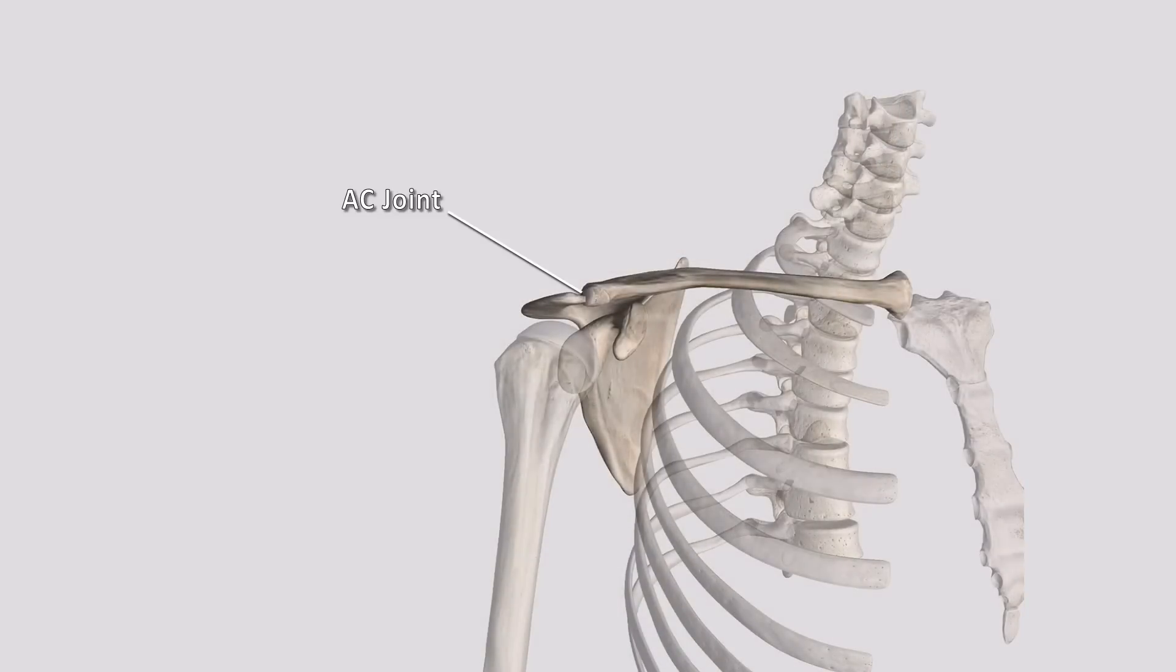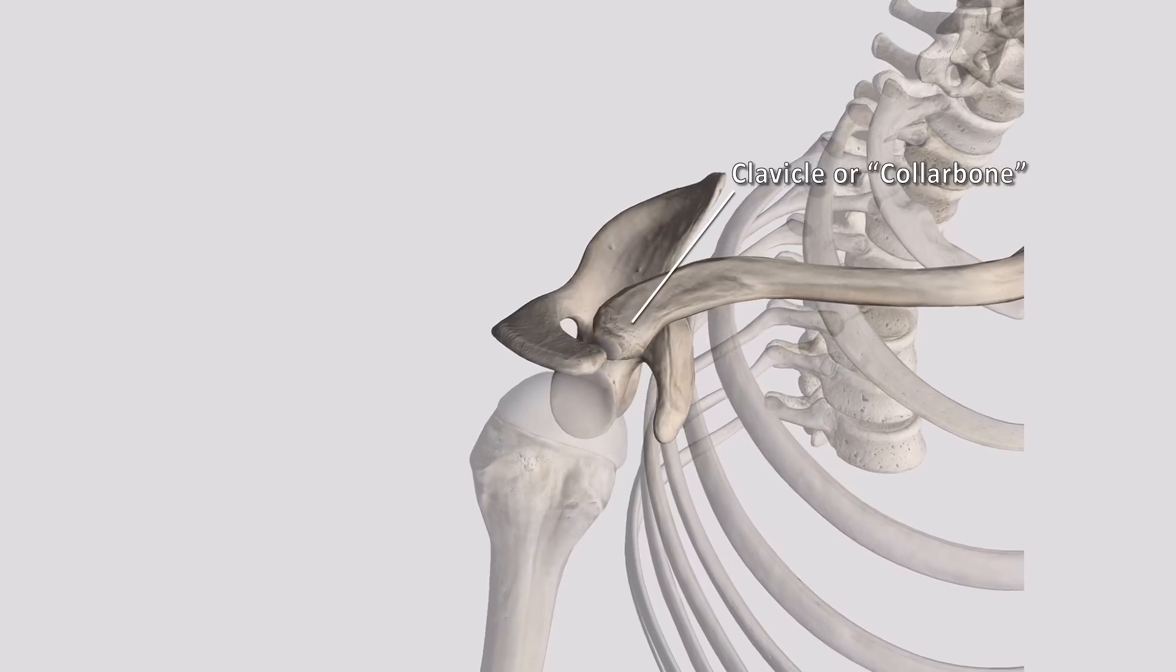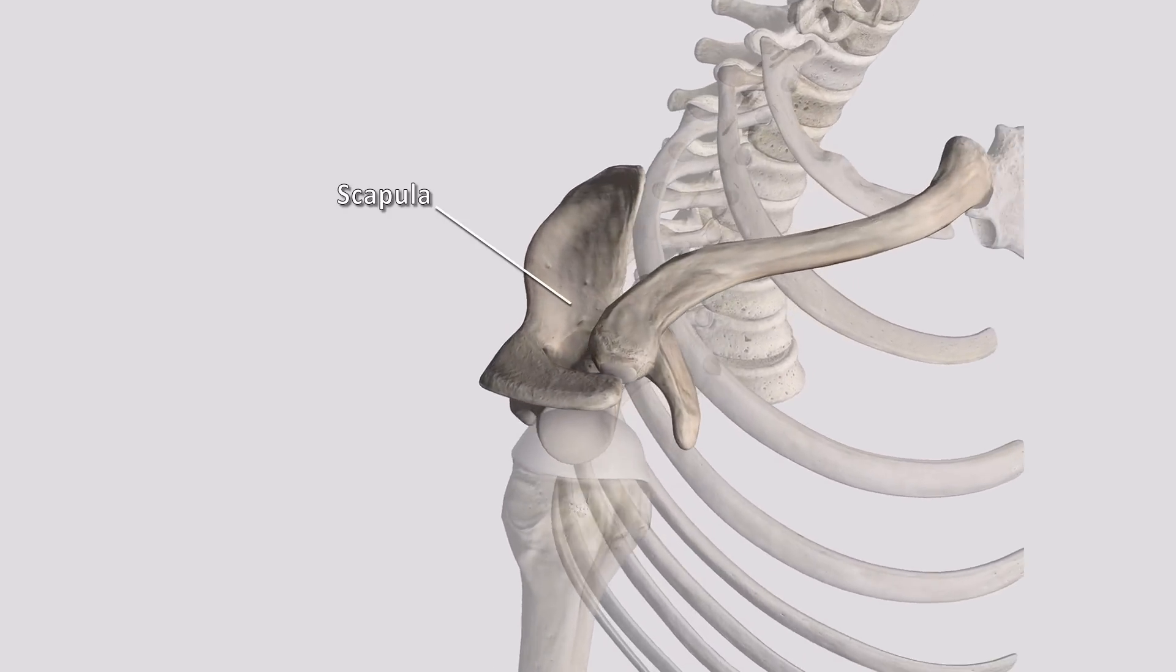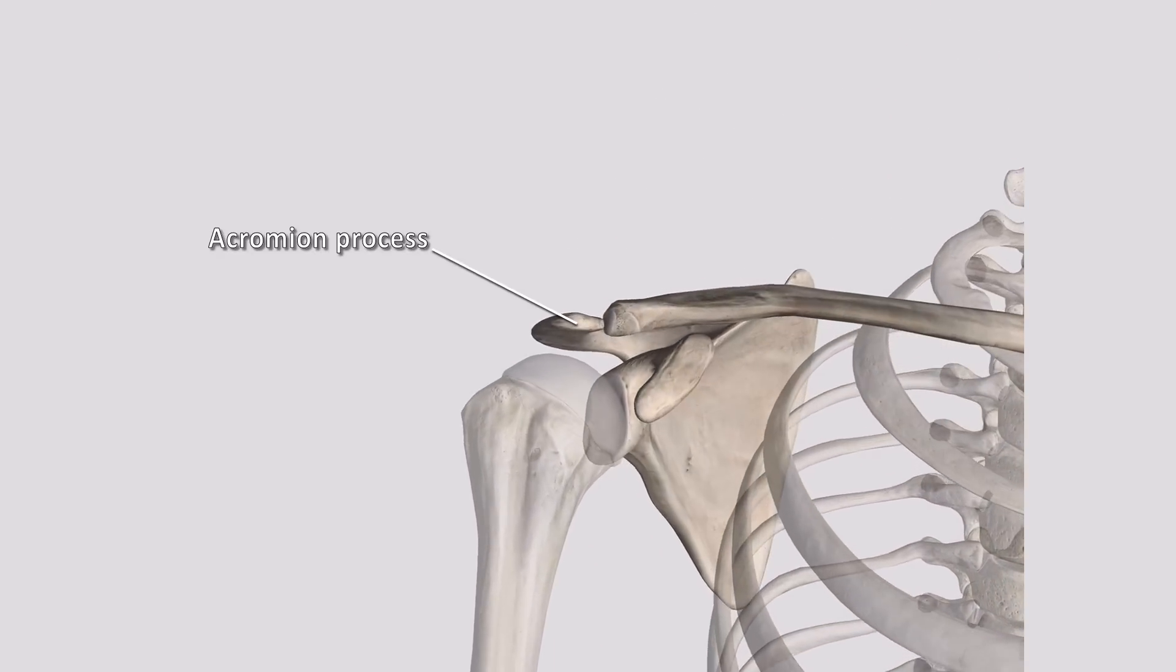The AC joint, or acromioclavicular joint, is a joint located between the clavicle, or collarbone, and the scapula, or shoulder blade, at an extension of bone known as the acromion process.